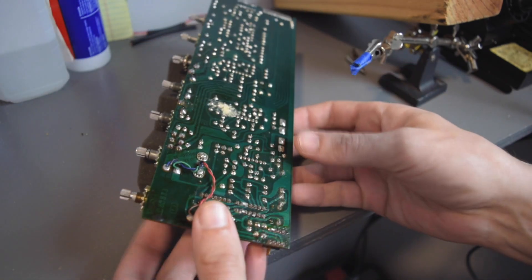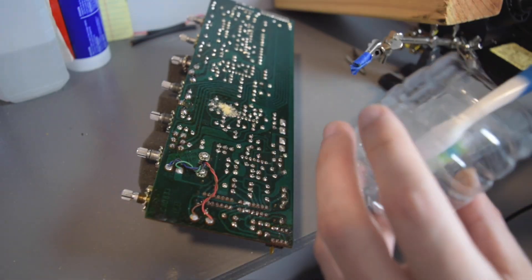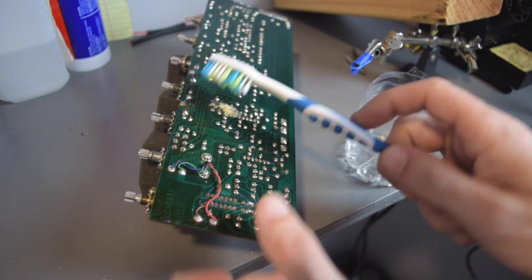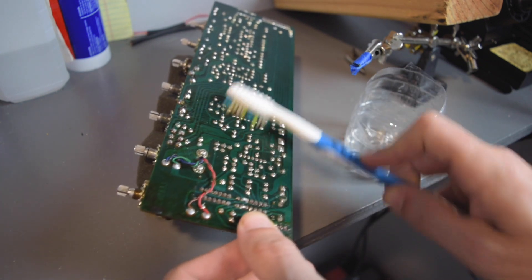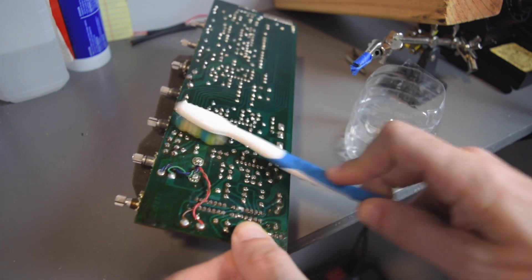We'll start out by using a little bit of acetone to clean that off. Now we can get a good look at our IC chips right there. We got three of them per channel.